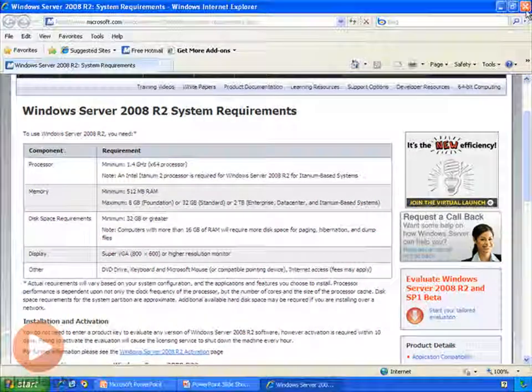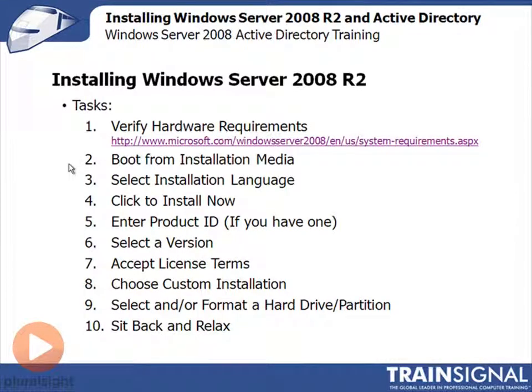Let me go ahead and close out of here and get us back over to our task list. After we've verified that our computer meets the minimum hardware requirements, we're going to need to boot from the installation media. I'm going to put in a Windows Server 2008 R2 DVD. When we boot from that media, it will take us into an installation wizard, which will prompt us to select an installation language. From there, step four — click Install Now. There's actually a button that says Install Now.